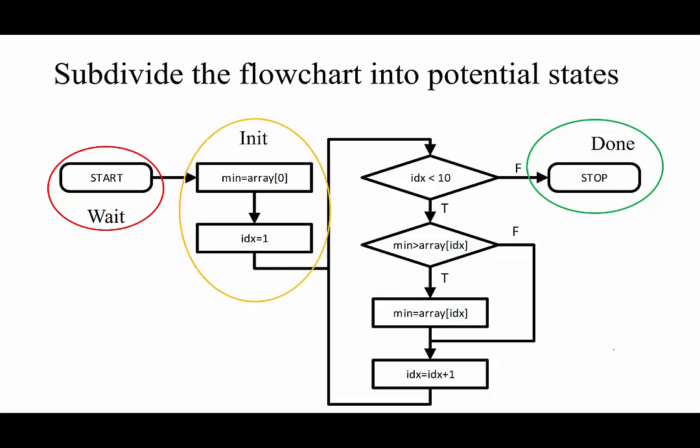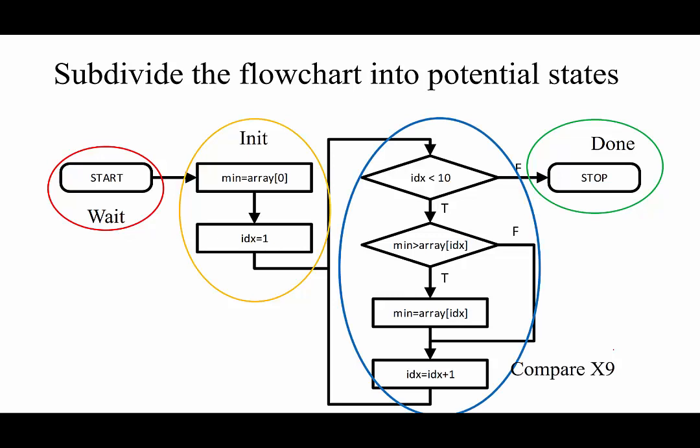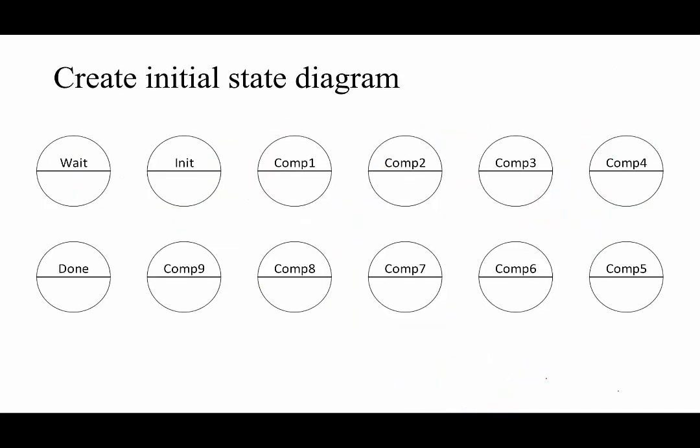So we can see that we will always want to initialize our minimum value to the zeroth element of the array and then increment our index from zero to one. Similarly, we will want a series of states that update the minimum value conditioned on the relative values of the minimum value and the ith element of the array. We will want at least nine of these states to iterate through the entire array. Consequently, we have 12 states for this problem.